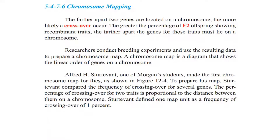Hello friends. In our new lesson we're going to study on linked genes and linkage. Chromosome mapping: the farther apart two genes are located on a chromosome, the more likely crossing over occurs. Crossing over, which we remember from chapter one in meiosis, happened in prophase one of meiosis one — it's the exchanging of gene locations between two non-sister chromatids.